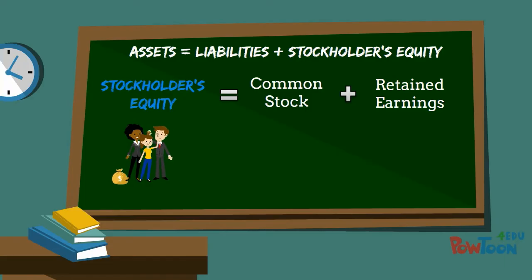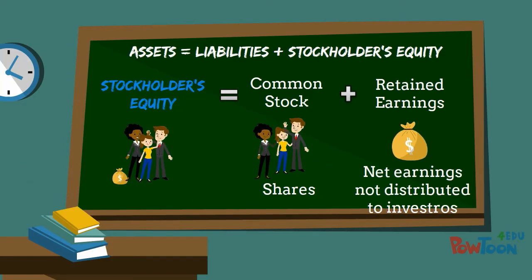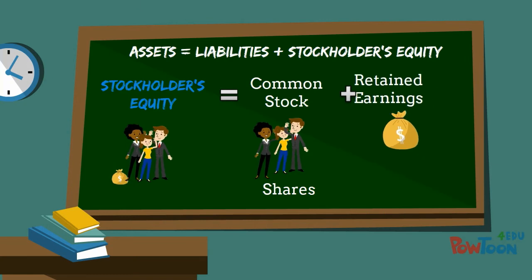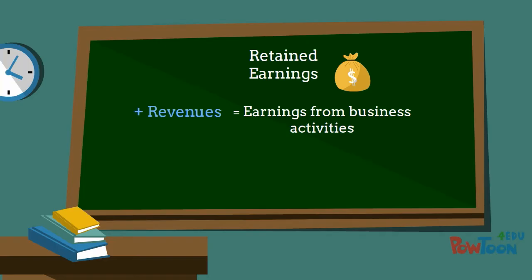Common stock are shares of ownership sold to investors, while retained earnings are the net earnings of the company that are being retained to help grow the company. Retained earnings increases as the company earns revenues, which are made from conducting business activities such as selling its products or providing services to customers.